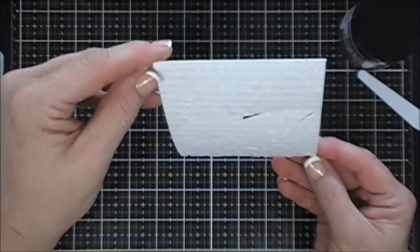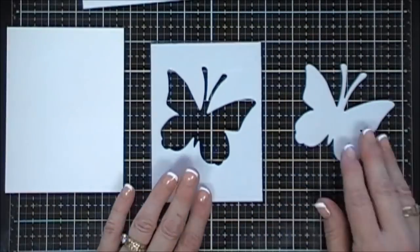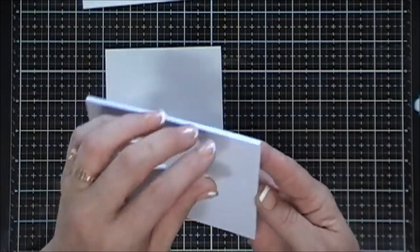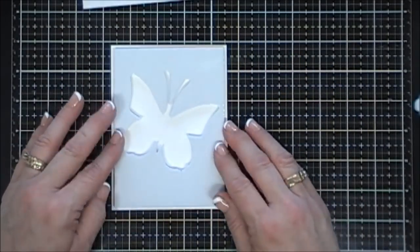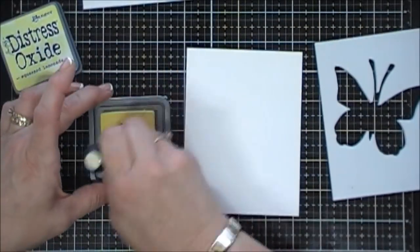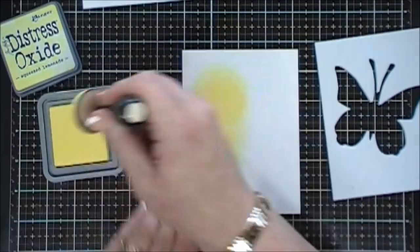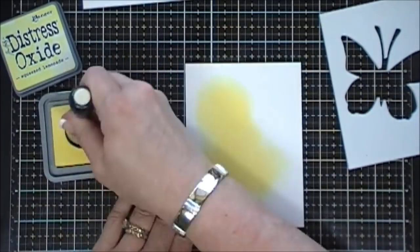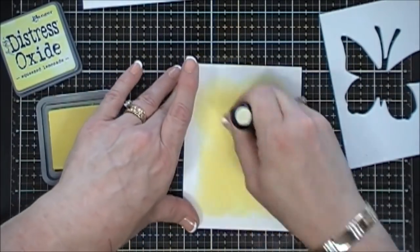You can see that die cut piece in the center stenciled beautifully also. While that's drying, we're going to work on our card base. I want to add a little bit of color behind my butterfly, so for this I'm going to use my distress oxide ink. This is Squeezed Lemonade, a really pretty yellow.